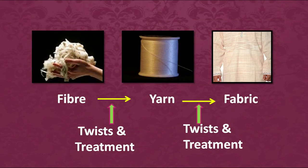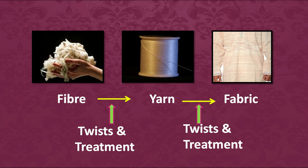By themselves, fibers are too weak to make into a fabric. So we process these fibers to make them into yarns through special processes. If you look at this slide, you can see fibers being twisted and given special treatment to obtain yarn. These yarns are further refined and twisted to create different kinds of yarns, which are then woven to make a fabric.